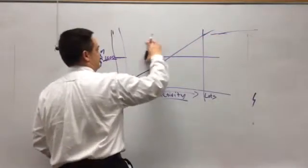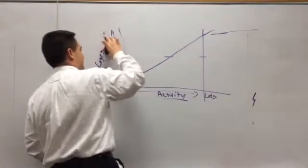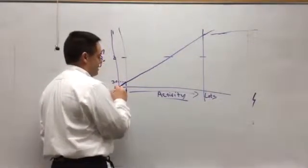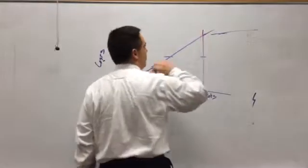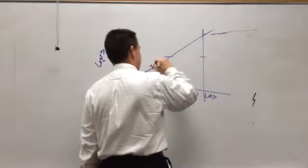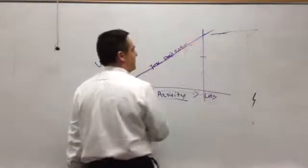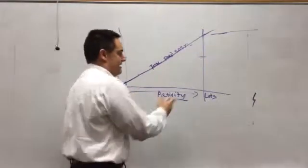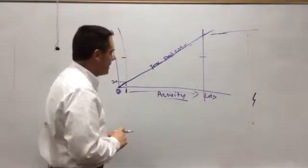With variable costs, if you have no activity, you have no cost. As activity increases, the total cost goes up as well. The total cost line goes up at an angle as activity increases, unlike the fixed cost line which stays flat.